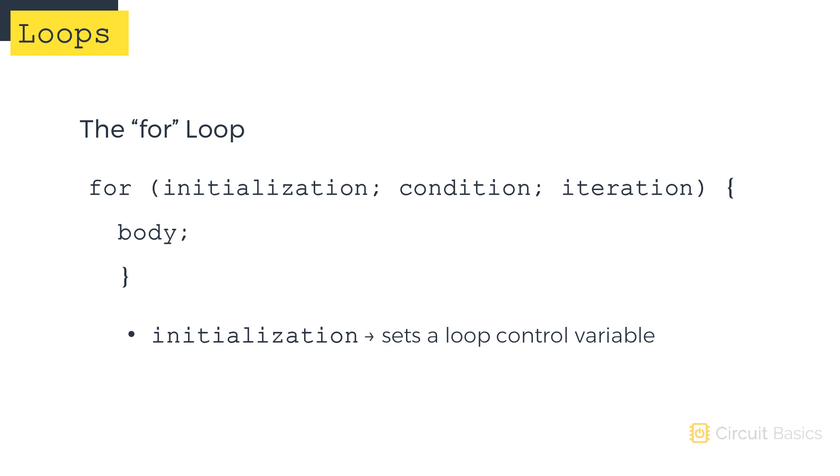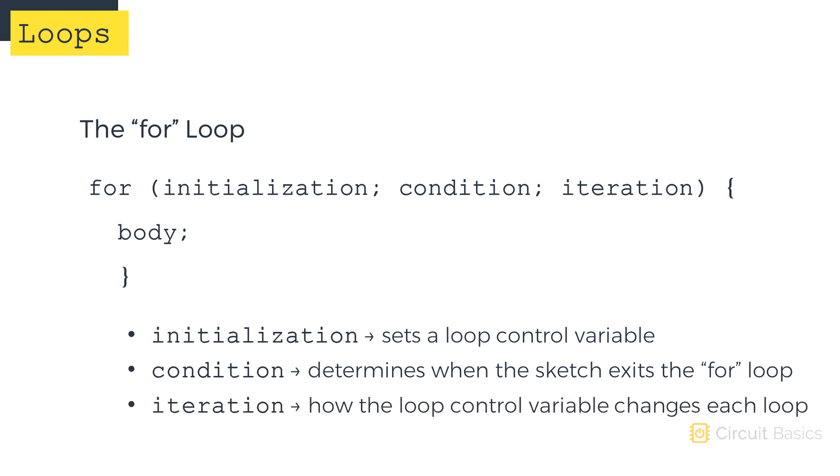The initialization value sets a loop control variable. The loop control variable is usually called i or j. The condition determines when the sketch exits the for loop.